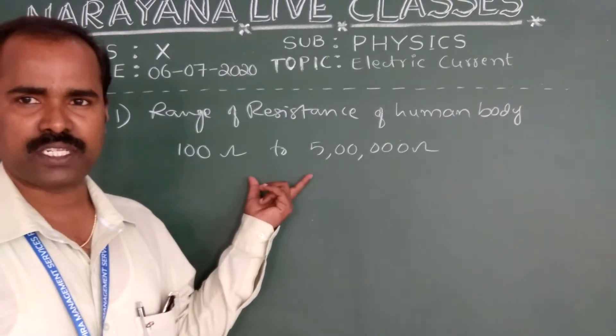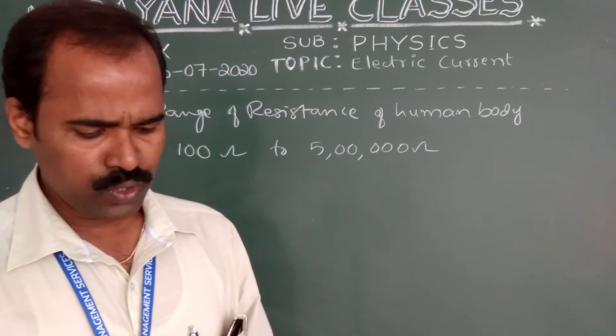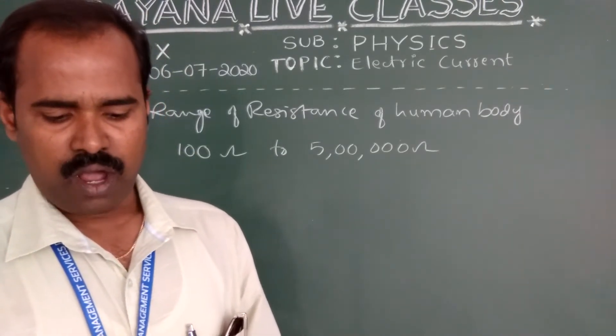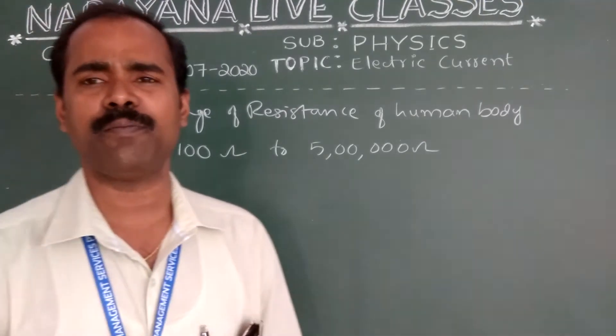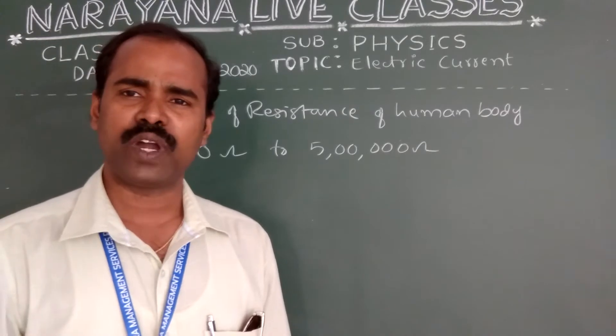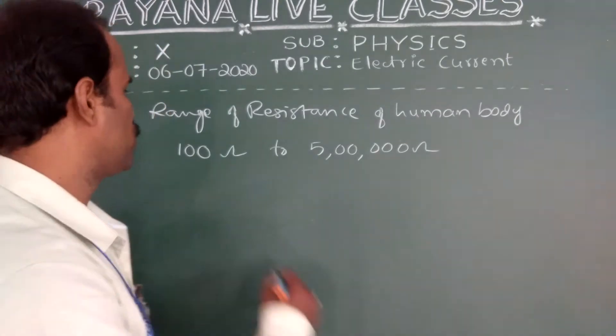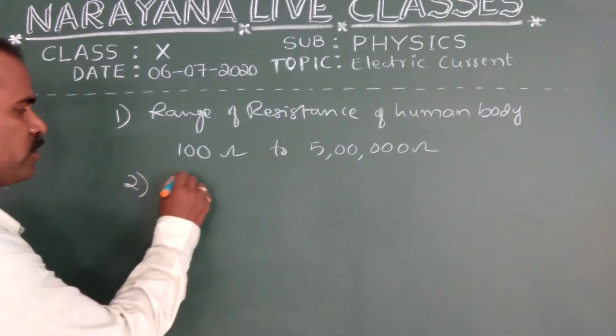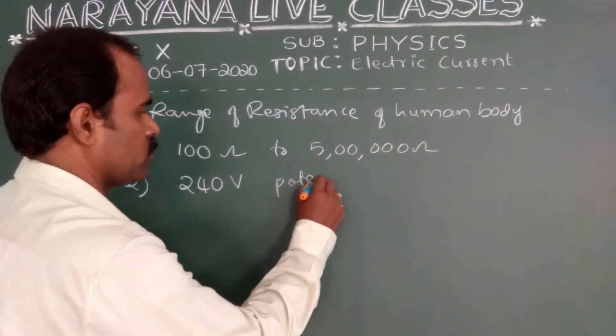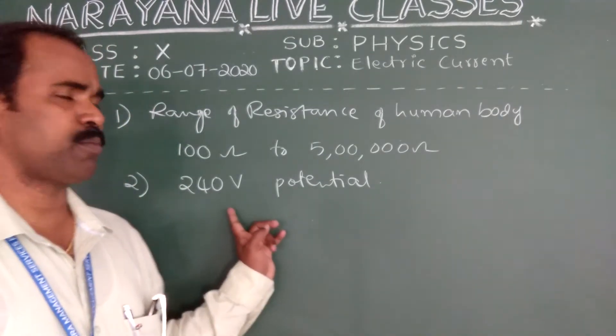This is the range of resistance offered by a human body. Next question: do you know the voltage of mains that we use in our household circuits? Yes. In India, for domestic purpose, we are using 240 volts of potential supply. We are using 240 volts potential. This is for domestic purpose.